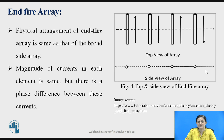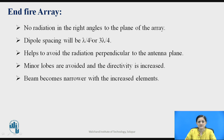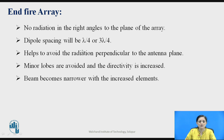The side view of this end fire array system is shown in this figure. For the end fire array: there is no radiation at right angles to the plane of the array; dipole spacing should be lambda by 4 or 3 lambda by 4, which helps to avoid radiation perpendicular to the antenna plane; minor lobes are avoided and therefore directivity is increased. In the end fire array, the beam becomes narrower with an increase in the number of elements.